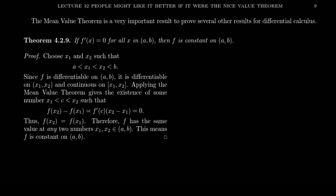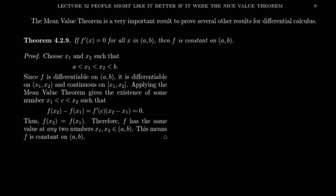In previous videos for lecture 32, which is about the mean value theorem, I've said that the mean value theorem is essentially the most important result for differential calculus — that is, the calculus of derivatives. Why do I put so much emphasis on the mean value theorem? Let me, as we end lecture 32, mention two important consequences of the mean value theorem, which we will use later on in our lecture series when we reverse the process. When we start considering antiderivatives, the mean value theorem will tell us that if you know a function's derivative, you basically know the function minus one bit of information.